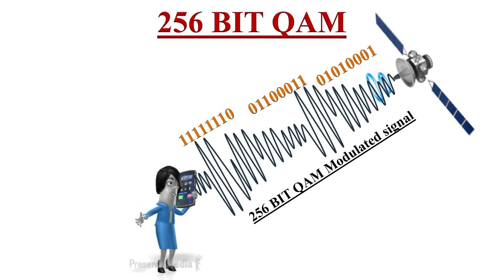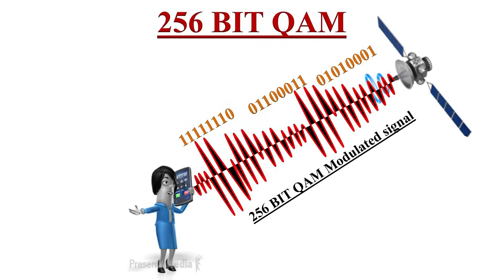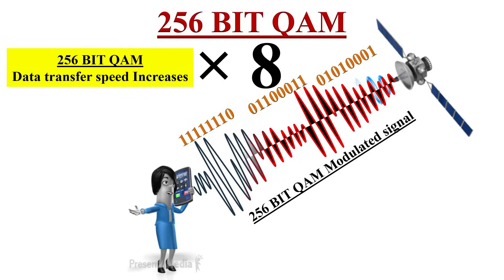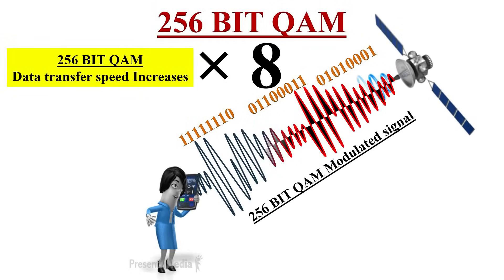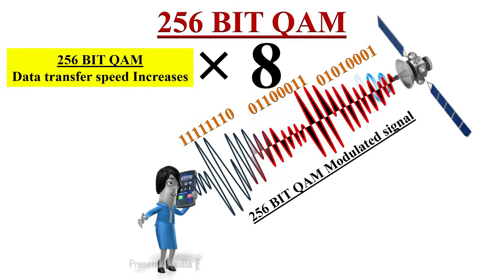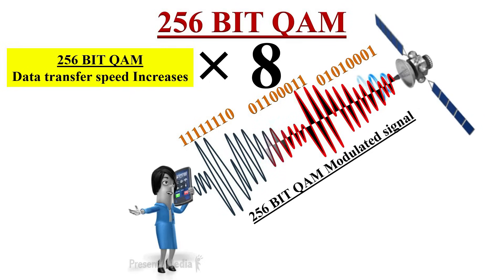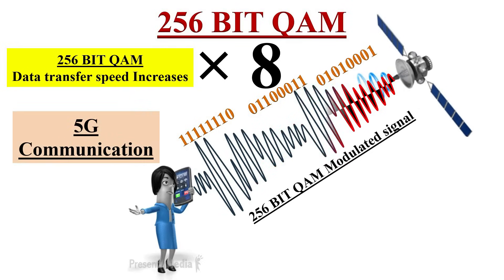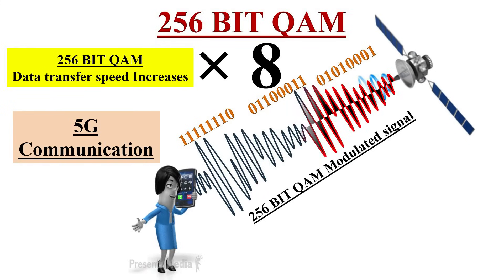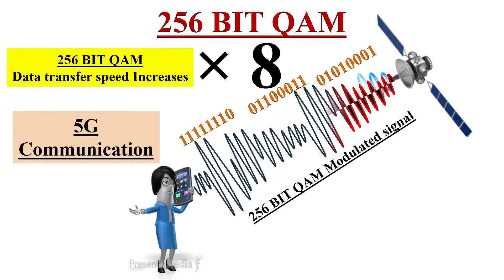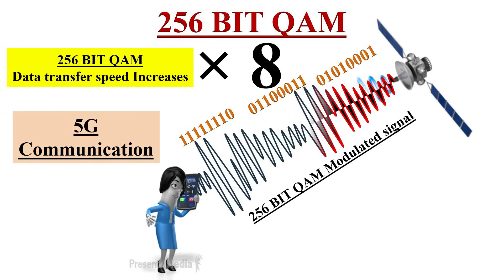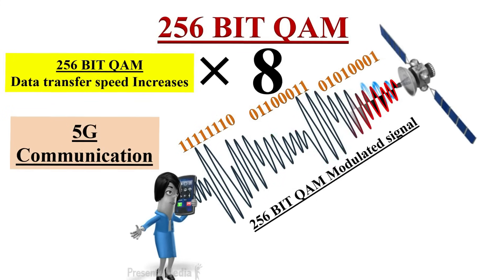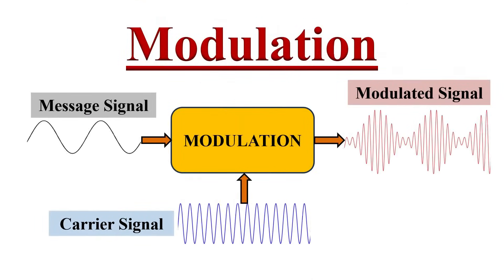Scientists have even achieved 256-bit QAM, which increases the data transfer speed by 8 times compared to normal modulation technique. This is now being used in 5G communication. 256-bit QAM uses 8 bits of data at a time.